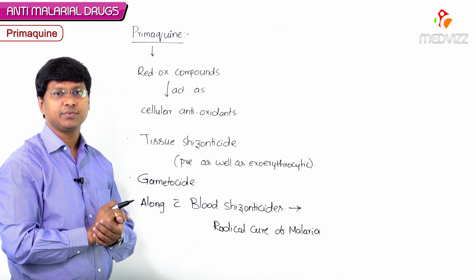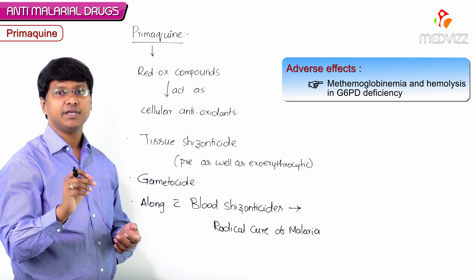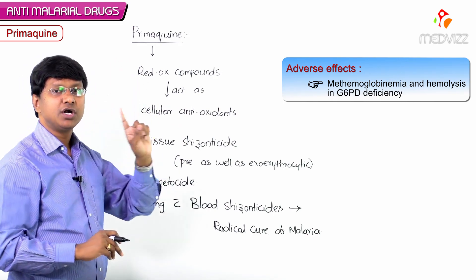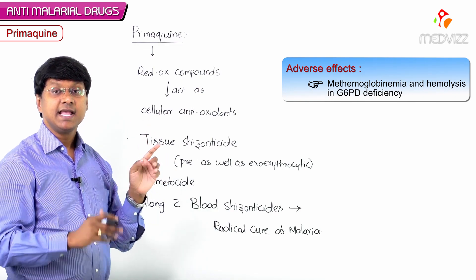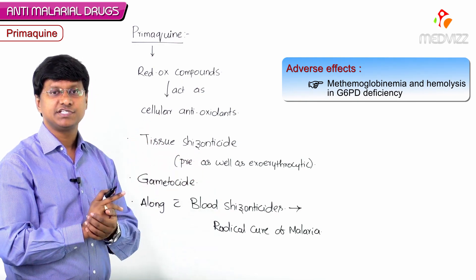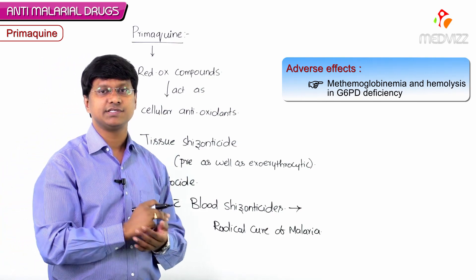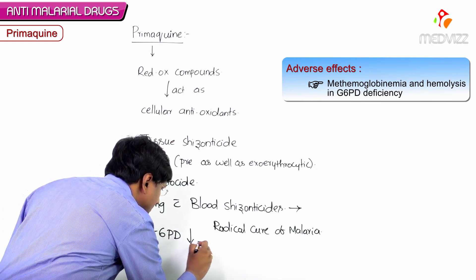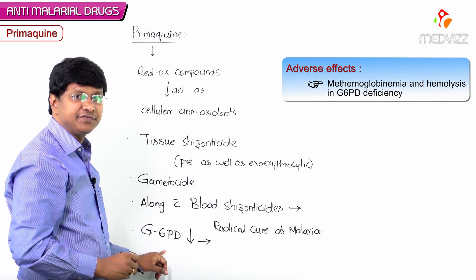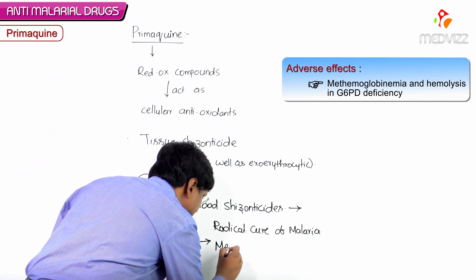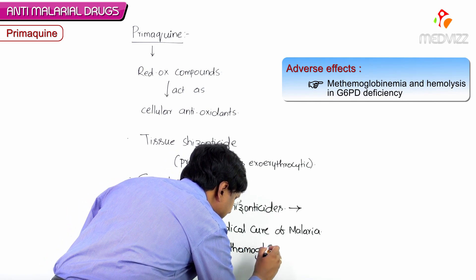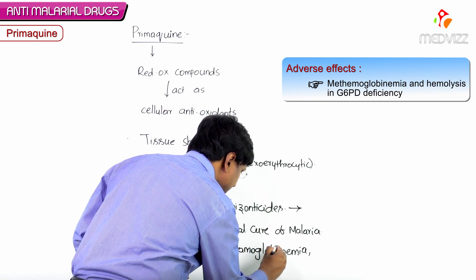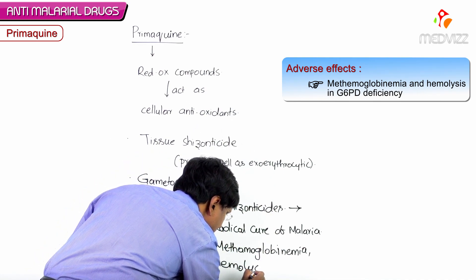Primaquine can cause methemoglobinemia and as well as hemolysis in G6PD deficiency patients. This particular drug primaquine should not be given in G6PD deficient patients. Similarly, quinine should not be given in G6PD deficient patients because quinine will also cause hemolysis. In G6PD deficient patients, primaquine will cause methemoglobinemia.